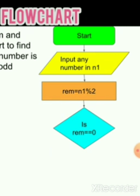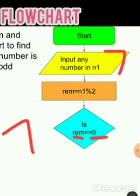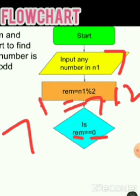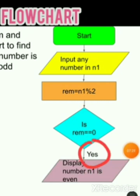The fourth step uses the decision symbol — the diamond shape — which is used for checking a condition. Here we check whether rim == 0. For example, if n1 = 7, then 7 % 2 gives remainder 1. So rim = 1, and 1 == 0 is 'No.'